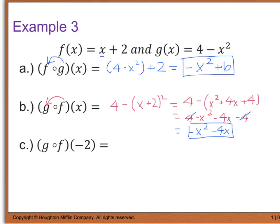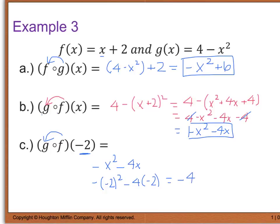Last but not least, we have g of f of negative 2. What I would recommend is that you take your composite function from part B, which was negative x squared minus 4x, and evaluate it at negative 2. So this gives us negative (negative 2) squared minus 4 times negative 2, which is negative 4. Negative 4 times negative 2 is a positive 8. Negative 4 plus 8 gives us a positive 4.